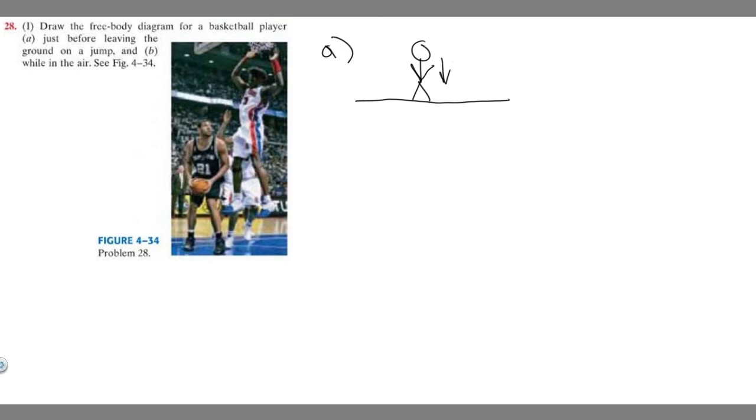I generally label it F sub whatever the object is, so I'm going to call it F sub P for player. Essentially what this is, is just the mass times the acceleration. We know force equals mass times acceleration.